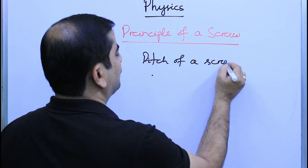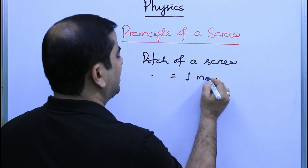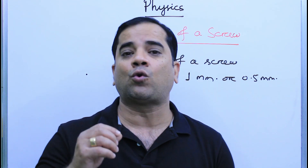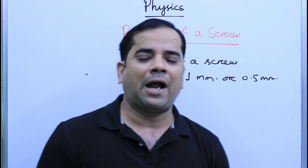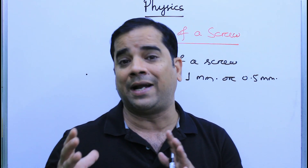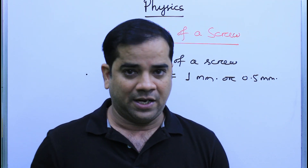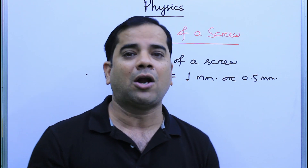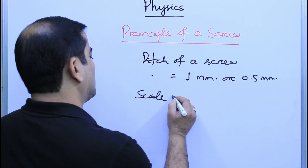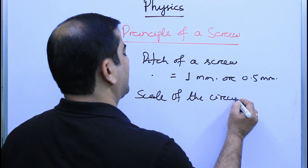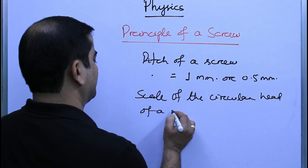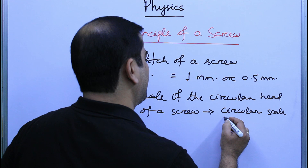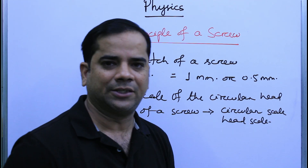Generally, the pitch of a screw is equal to one millimeter or 0.5 millimeter. By the rotation of the head of the screw we can achieve linear distance. To measure small lengths, the head of the screw is made large and graduated with divisions — either 100 divisions or 50 divisions. The scale on the head of the screw is called the circular scale or head scale.